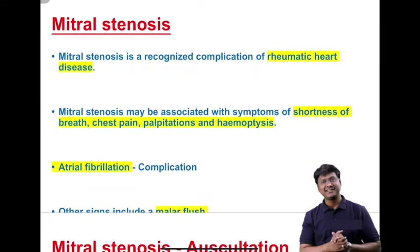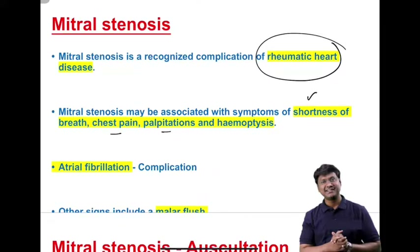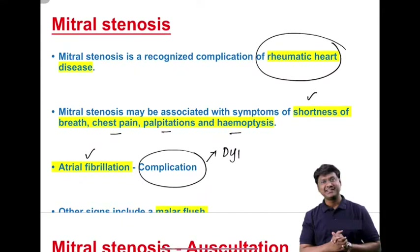The most common cause of mitral stenosis is rheumatic heart disease. Clinical manifestations include shortness of breath — mainly due to pulmonary edema — chest pain, and palpitations. Palpitations occur because left atrial enlargement leads to atrial fibrillation. Patients also develop hemoptysis. Another complication is dysphagia, caused by the enlarged left atrium compressing the esophagus, and hoarseness of voice.